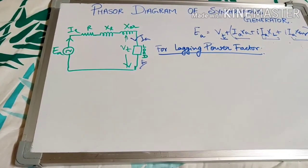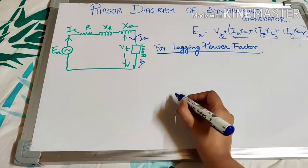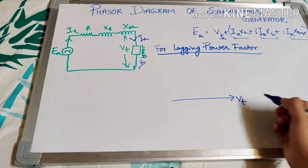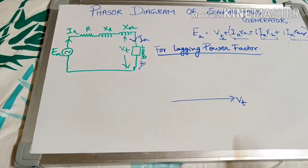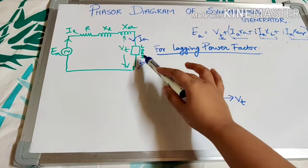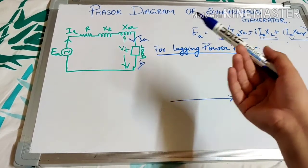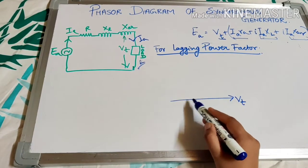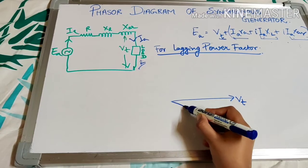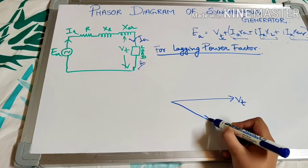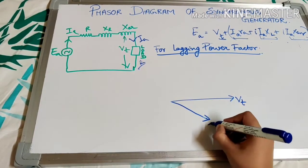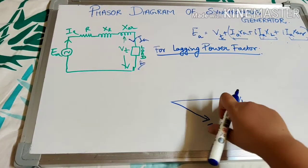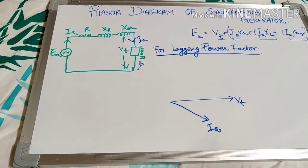Now we draw the phasor diagram for lagging power factor. We draw the terminal voltage Vt first. For a lagging load, which has an inductive component like an RL load, the current will lag behind the terminal voltage by angle φ. So the load current direction is lagging.